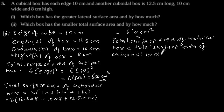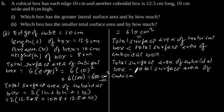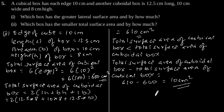The difference is: total surface area of the cuboidal box minus total surface area of the cubical box, which is equal to 610 minus 600, which gives 10 cm squared. So the total surface area of the cubical box is smaller than the total surface area of the cuboidal box by 10 cm squared.